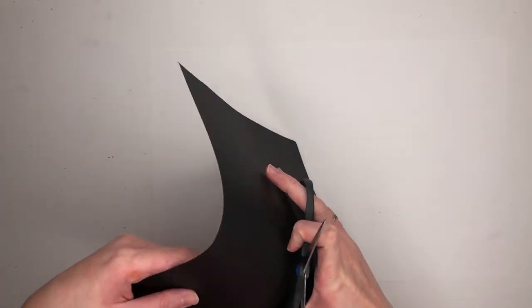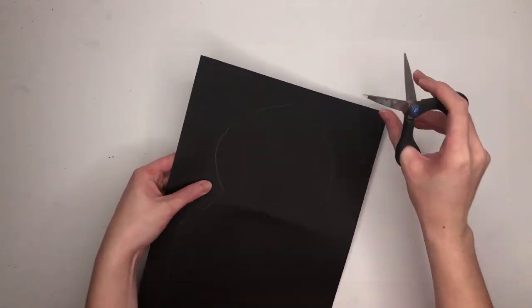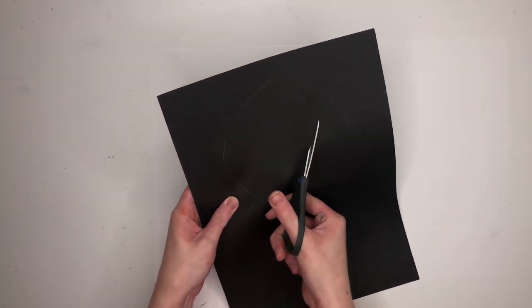Now we need to cut out our window without cutting into the side of the paper. Fold it in half and snip it in the middle, then you can put your scissors through that slit and start to cut.